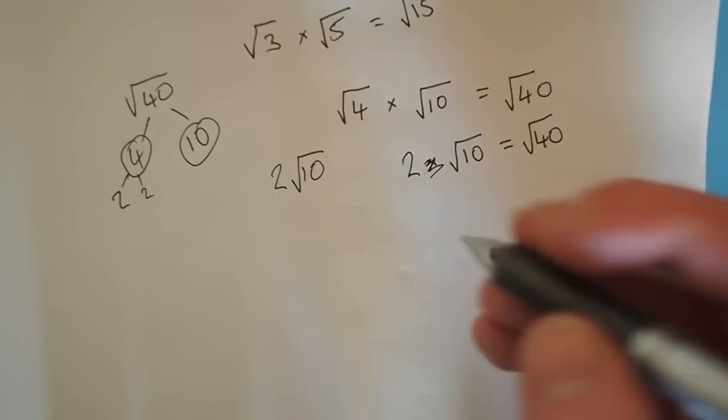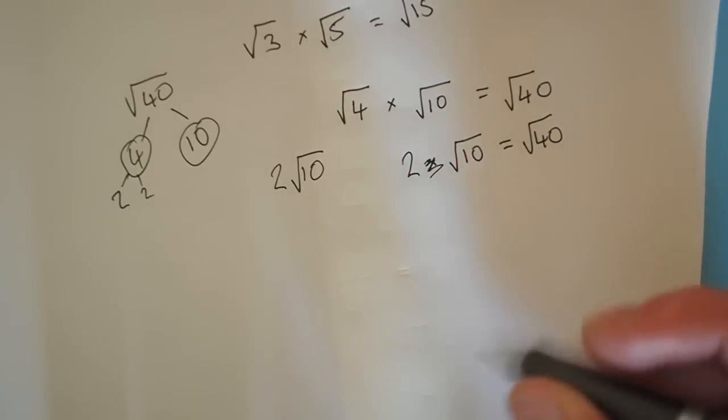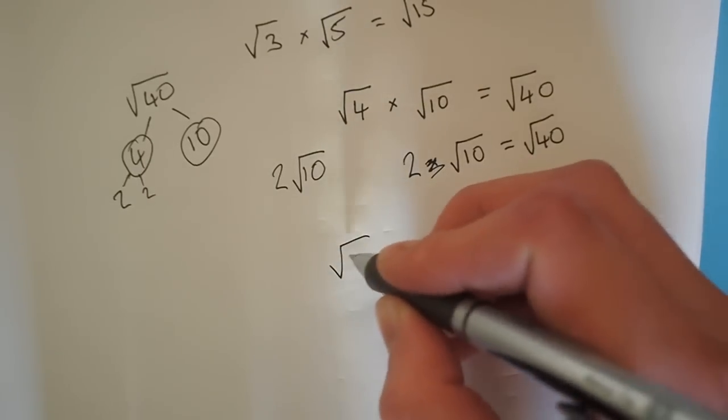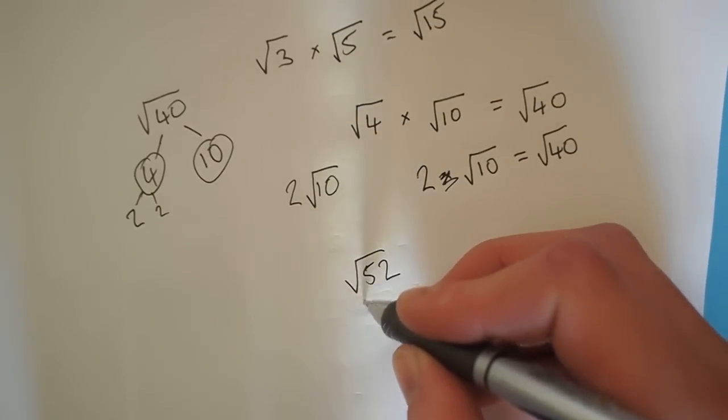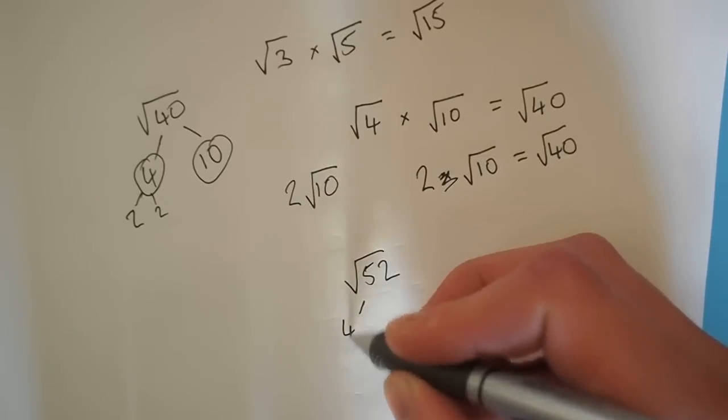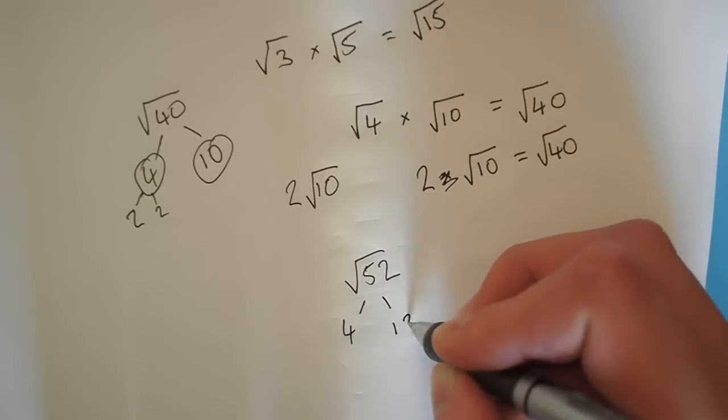I mean I can show you some more examples. Say we had a square root of 52. This can be split into 4 and 13 if I remember correctly.